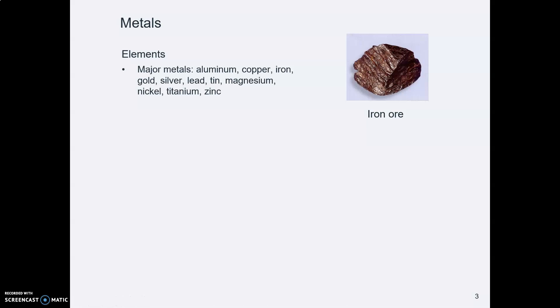Now, an element, as you probably know, is a material that you cannot break down any further. It has an atom that is the basic unit. So iron, here we are, iron is an element. Aluminum is an element.